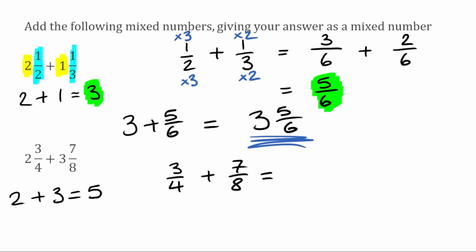So I want to add these fractions together now. The lowest common multiple of four and eight is actually eight. So I can convert these fractions into eighths. The seven over eight is already over eight, so we can leave that as it is. We now want to change this three over four. To turn four into eight, we multiply the bottom by two, and to keep this as an equivalent fraction, we do the same to the top. So three multiplied by two gives us six. Now adding these fractions together, we've got six over eight add seven over eight, which gives us thirteen over eight.